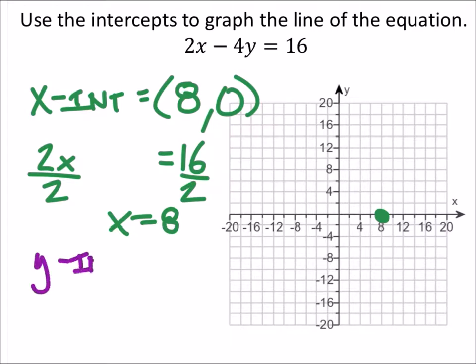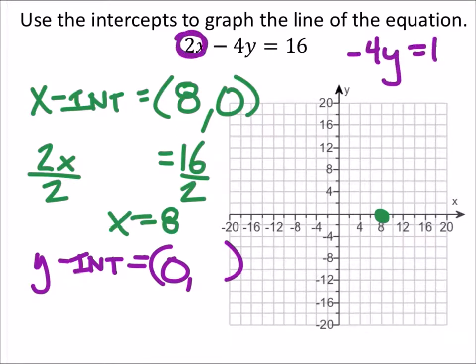Now for the y-intercept. What do we know always about the y-intercepts? Very good - the x-value is always zero. So all we've got to do is find the corresponding y-value. Again, I can just cover that up and rewrite this as negative 4y equals 16, and solve for y. Divide both sides by negative 4, and y is negative 4 in this ordered pair.